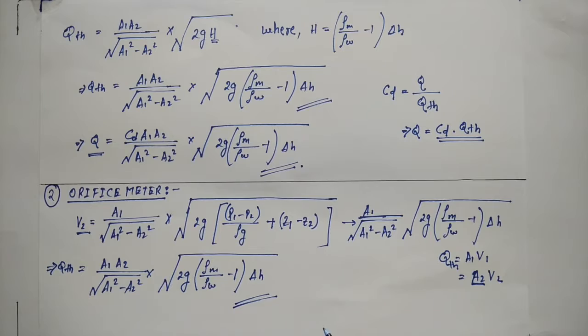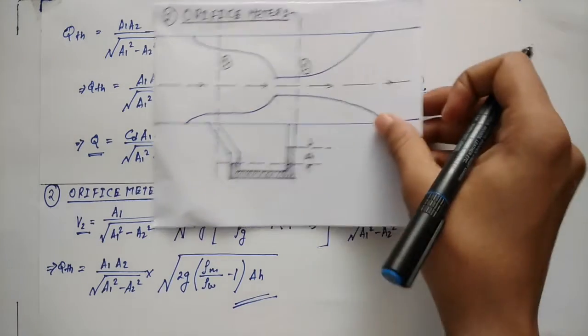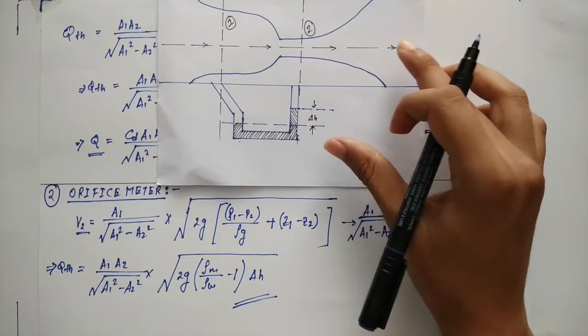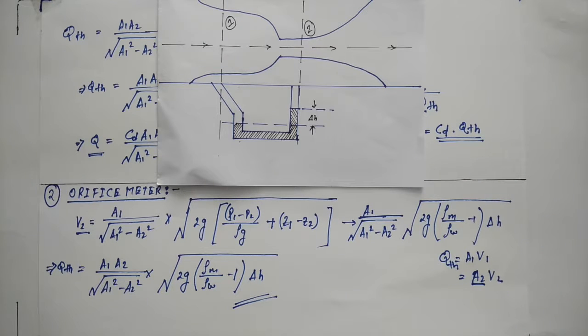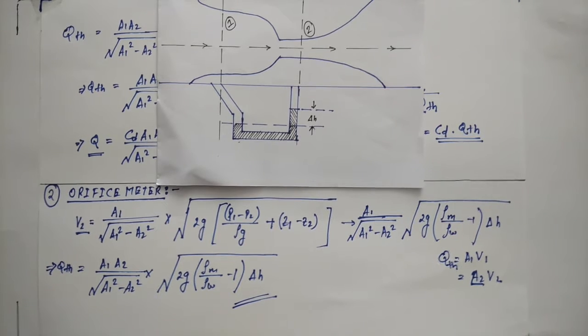ρₘ by ρw minus 1 into Δh. So this is the equation that we are getting for the orifice meter. The whole of the derivation is not included in the syllabus, but this equation can be used for solving the numericals.